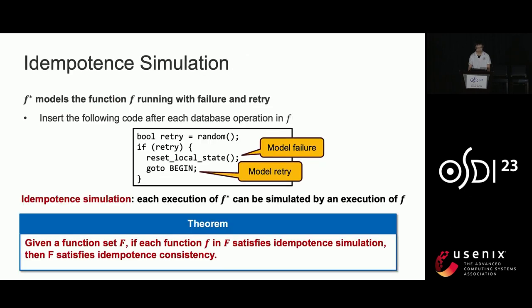Property P is defined as idempotent simulation. We construct a new function f* from f by inserting code after each database operation to model execution with failure and retry. This code uses a random function to model the randomness of failure, resets local states to model the loss of all local data on failure, and uses a 'GoToBegin' instruction to model the behavior of retry. Idempotent simulation means each execution of f* can be simulated by an execution of f without retry or failure. We prove the theorem that if each function in a set satisfies idempotent simulation, then the whole function set satisfies idempotent consistency.